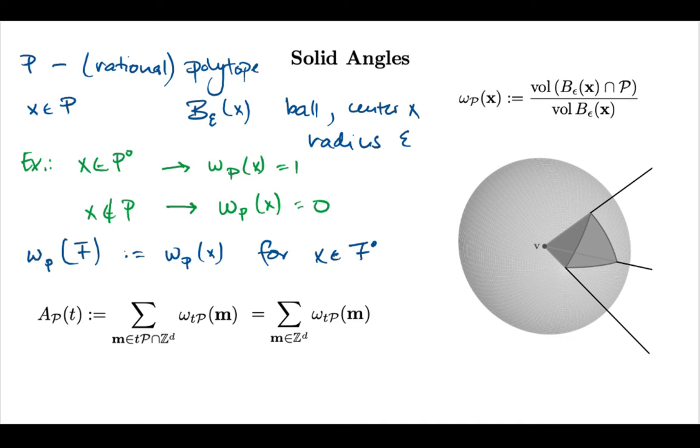What's special about this counting function now, I should really maybe say this measuring function, compared to the Ehrhart counting function, the Ehrhart quasi-polynomial? Well, one thing you might notice already in two dimensions is that solid angles have an additive character. If I take a polytope and I cut it into two pieces somehow, as long as these two pieces intersect in a lower dimensional object,